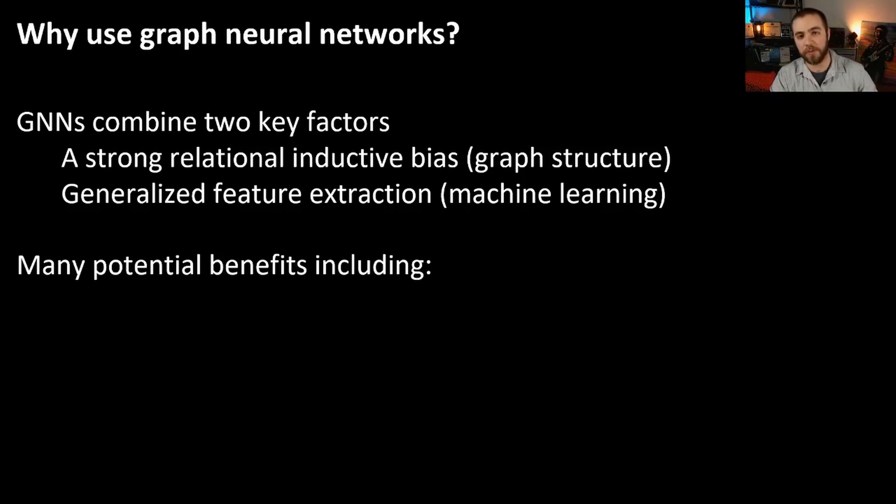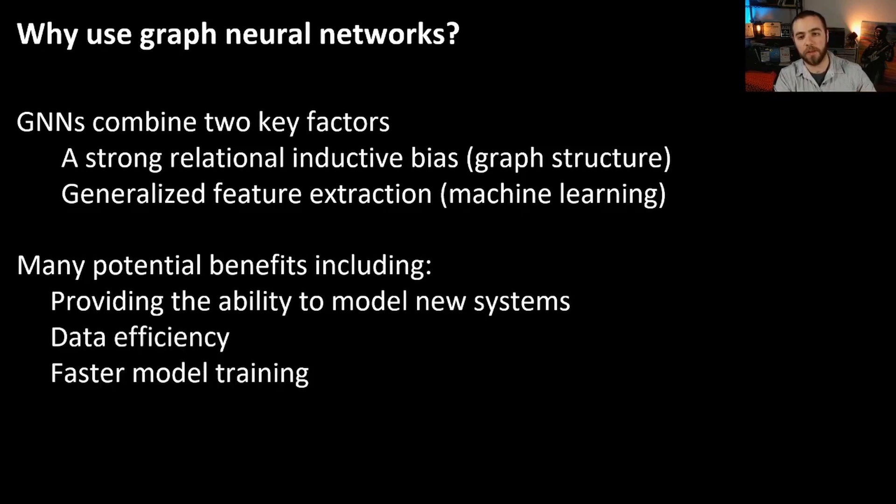They have a strong relational inductive bias, which means that they explicitly account for the graph structure of your data. And they also have a generalized feature extraction that you get from backpropagation machine learning, essentially. Now, there are many potential benefits that these models offer as well. So they can provide the ability to model new systems. They can provide data efficiency over perhaps less efficient methods. You can train your models faster because you have such a strong relational inductive bias. And in general, you can possibly increase model accuracy compared to, say, a multi-layer perceptron or some other model that does not explicitly account for the graph structure of the data. So hopefully at this point, you are thoroughly convinced that graphs can be very powerful models for your data.